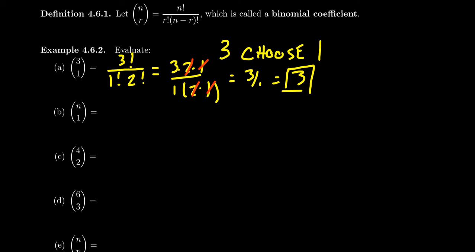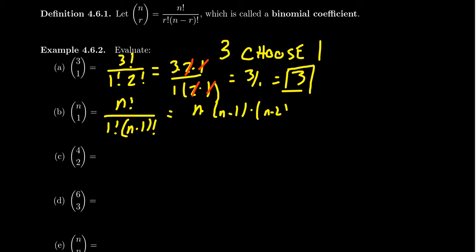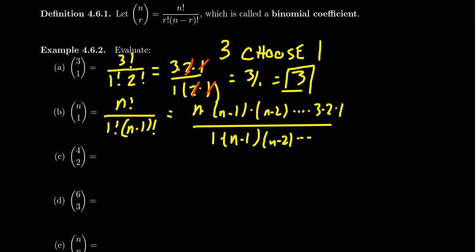If you compute n choose 1, that looks like n factorial over 1 factorial times n minus 1 factorial. Well, n factorial is n times n minus 1 times n minus 2 all the way down to 1, and n minus 1 factorial is n minus 1 times n minus 2 down to 1. Dividing by 1 doesn't do anything, and everything else cancels out except for the n on top. So n choose 1 is always going to be n.